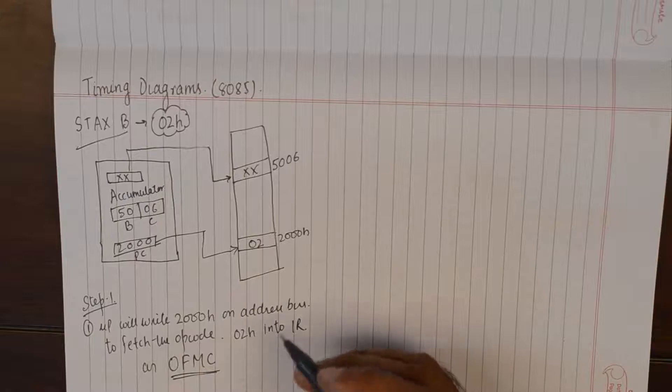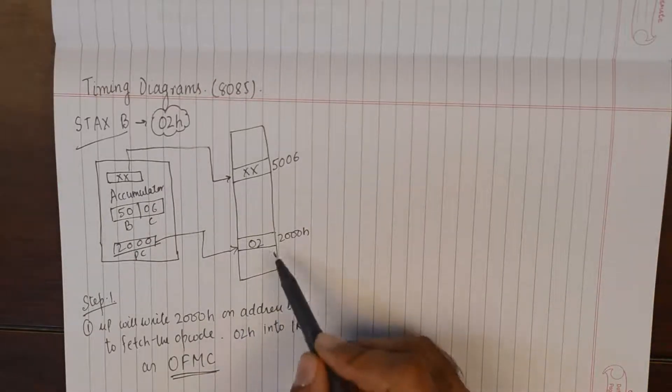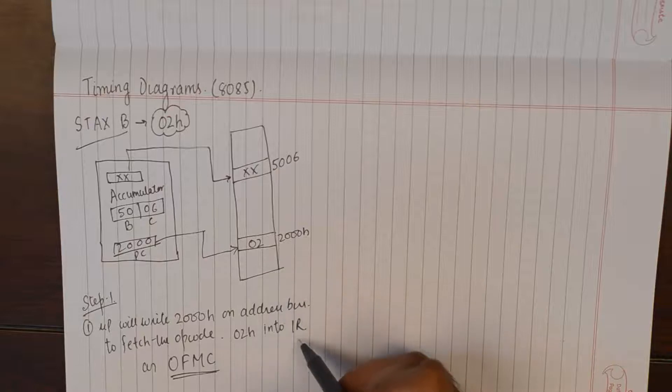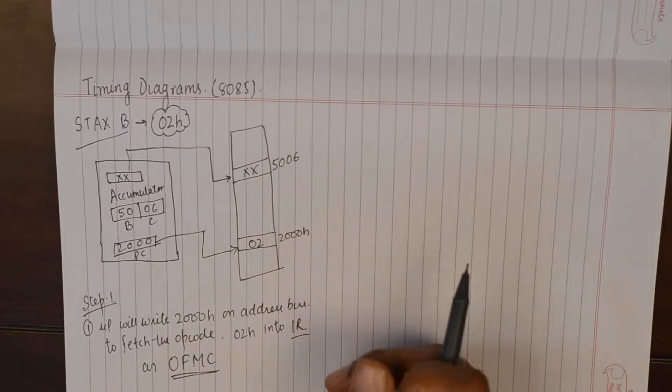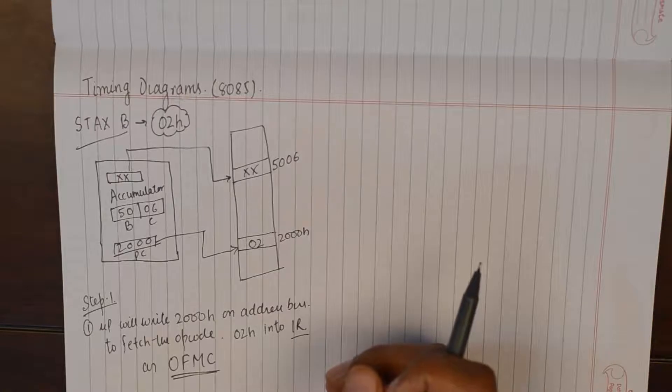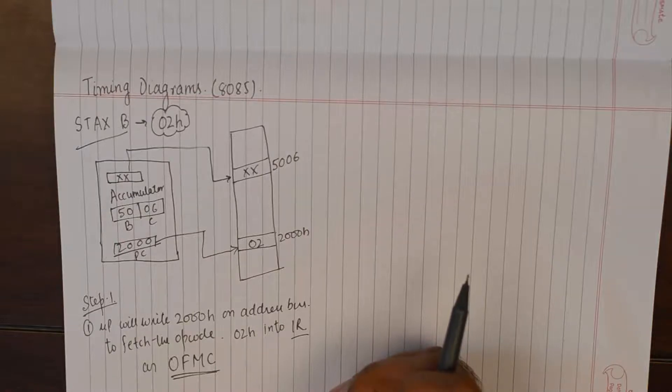So in the step number one microprocessor will point to 2000H, it will bring 02 by placing it on the data lines and bring it into instruction register where it will be interpreted as STAX B, which means that we need to copy the contents of accumulator to an external memory location whose address is pointed by the BC register pair.